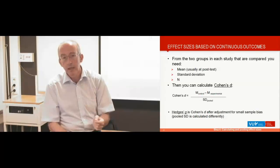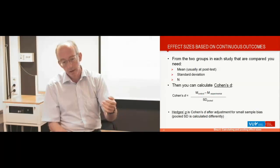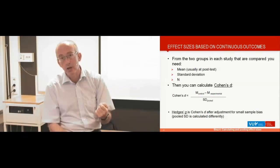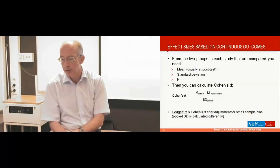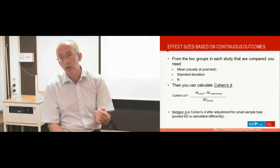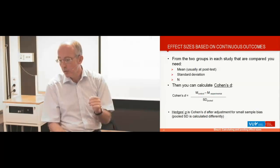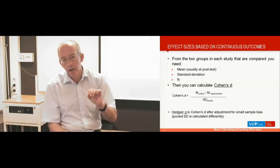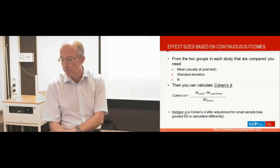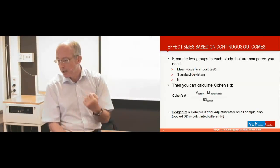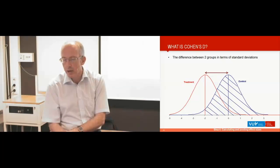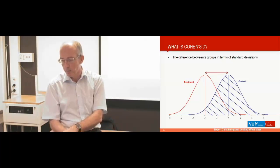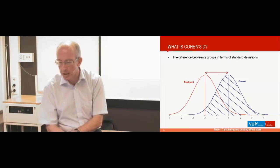Cohen's D is the mean of the two groups subtracted from each other and divided by the pooled standard deviation of the two groups. Hedges' g is the same as Cohen's D, only with another way of calculating the pooled SD, and it adjusts for small sample bias. So if you have more studies with smaller sample sizes, you should use Hedges' g instead of Cohen's D.